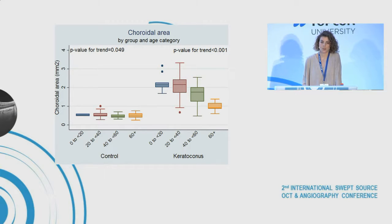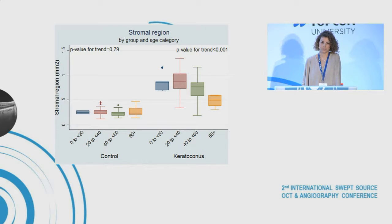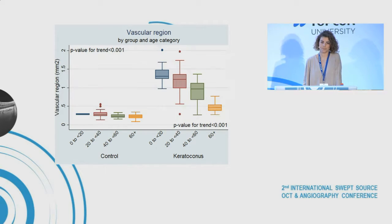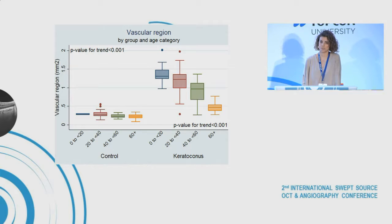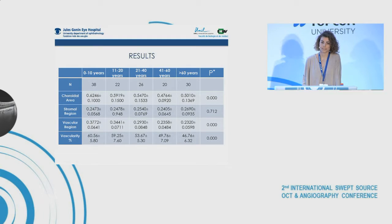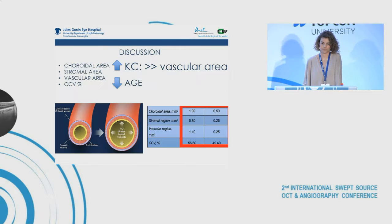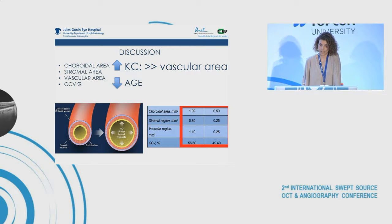As you can see here, choroidal area, stromal region, and vascular region were all increased in keratoconus patients, but these values decreased with age. Although the stroma of these patients is enlarged, the main cause for this choroidal thickening was vascular dilation.